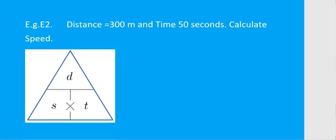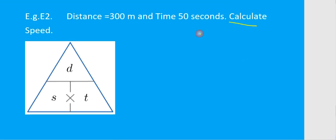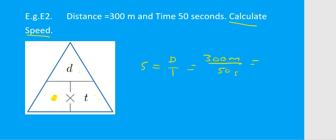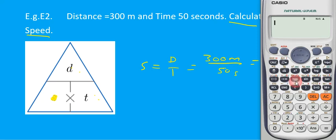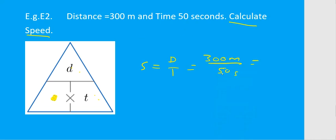For the second example, calculate speed. Cover speed in the DST triangle and you get distance over time. Distance is 300 meters and time is 50 seconds. 300 divided by 50 gives 6, so the speed is 6 meters per second.